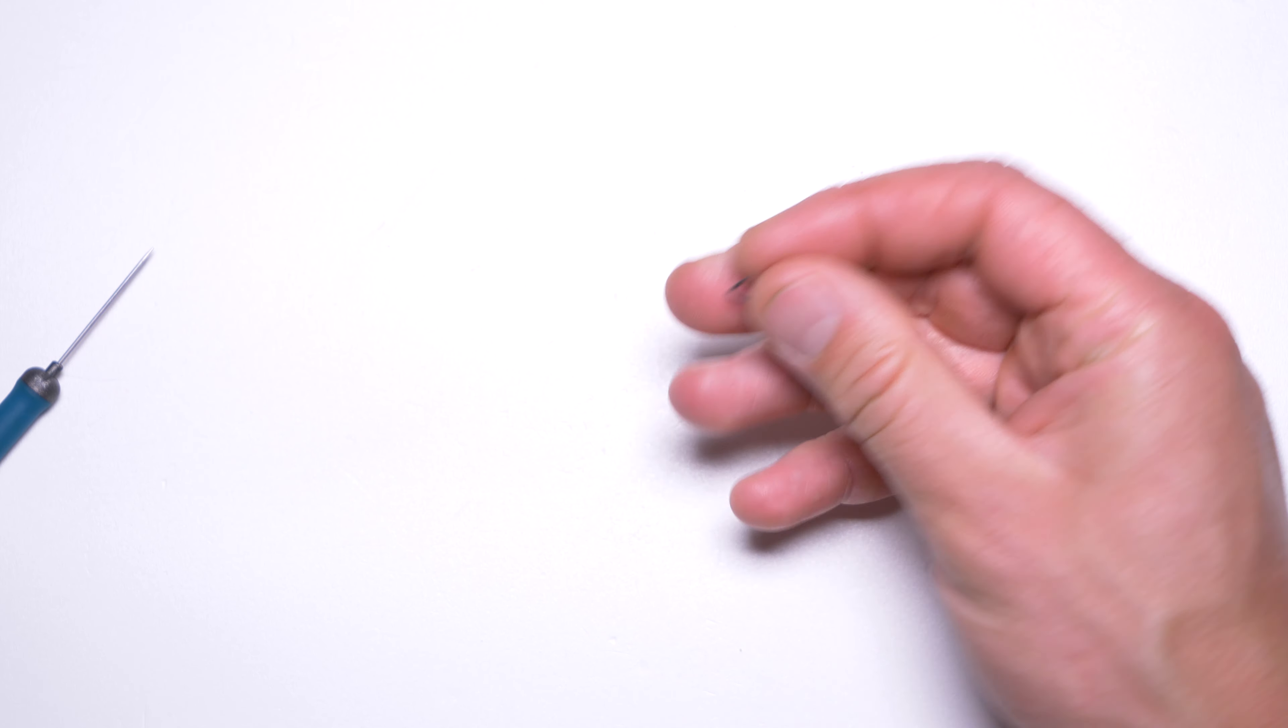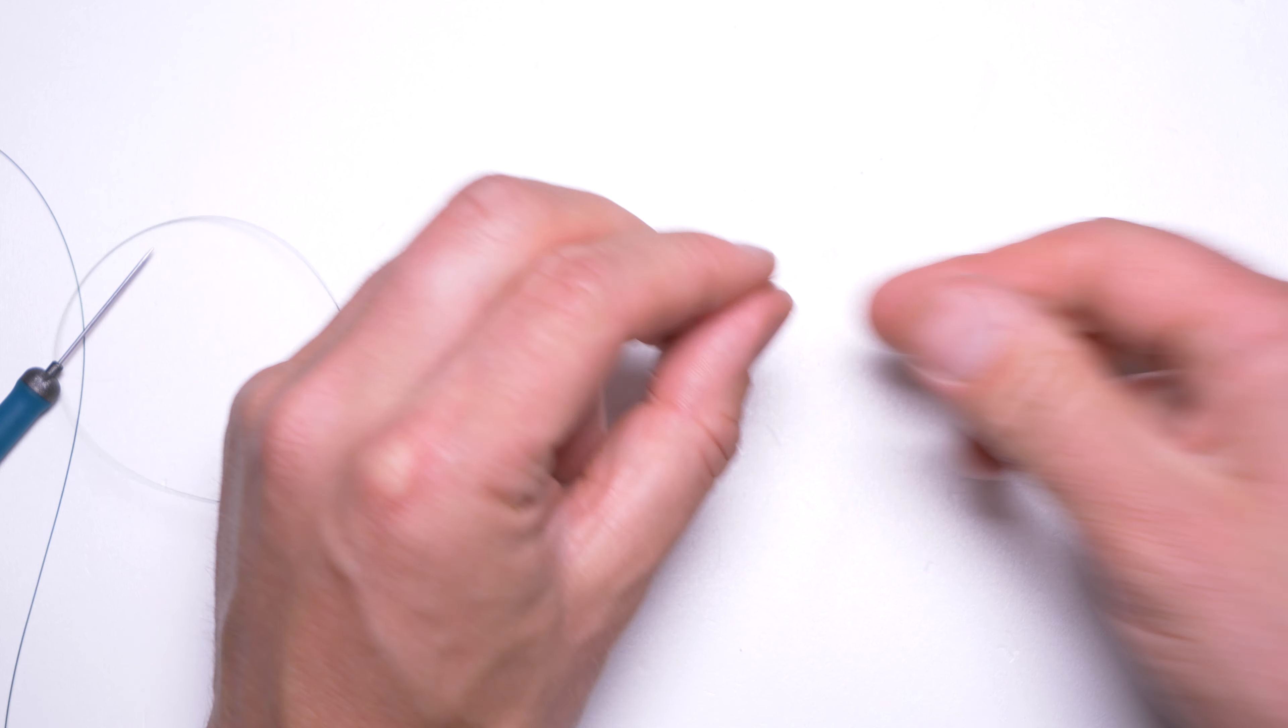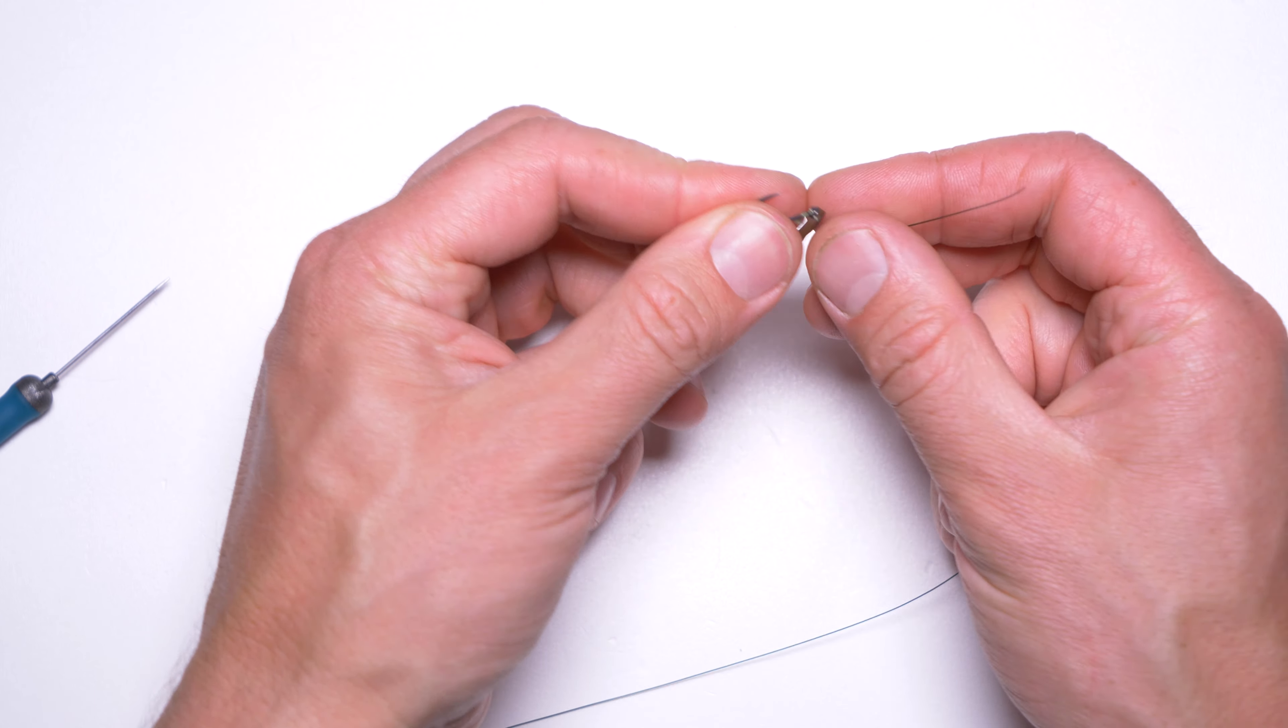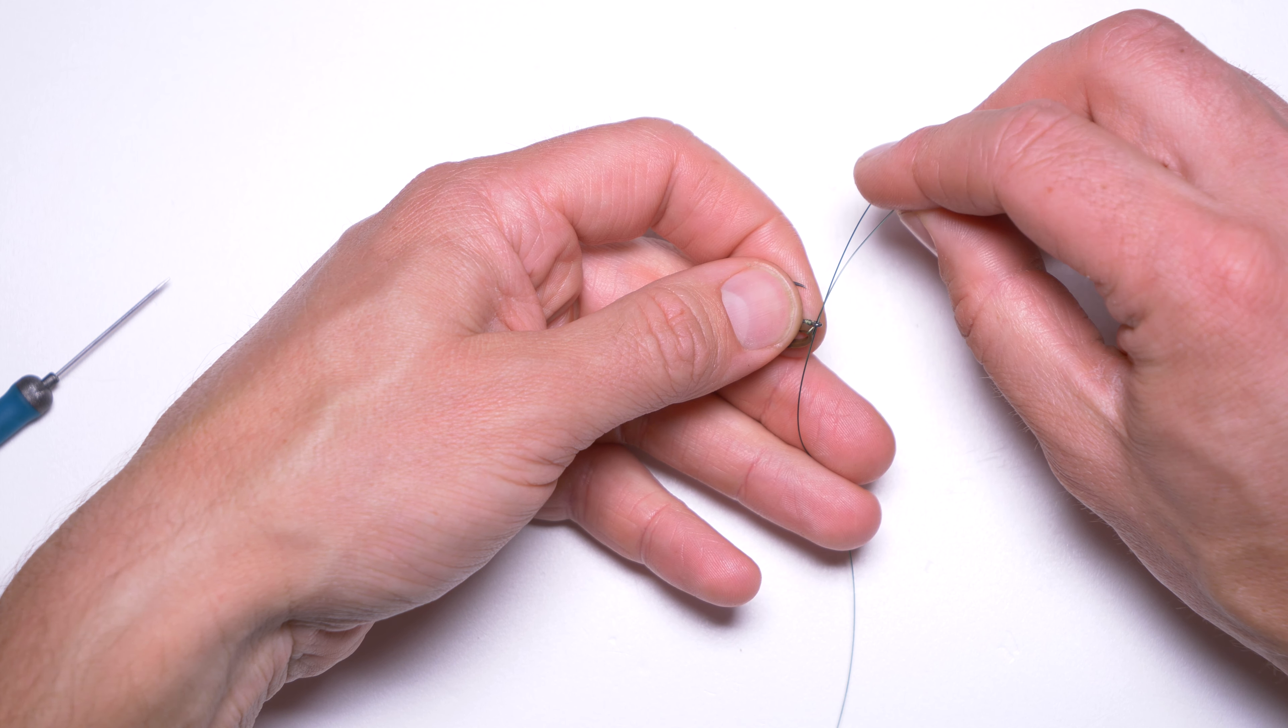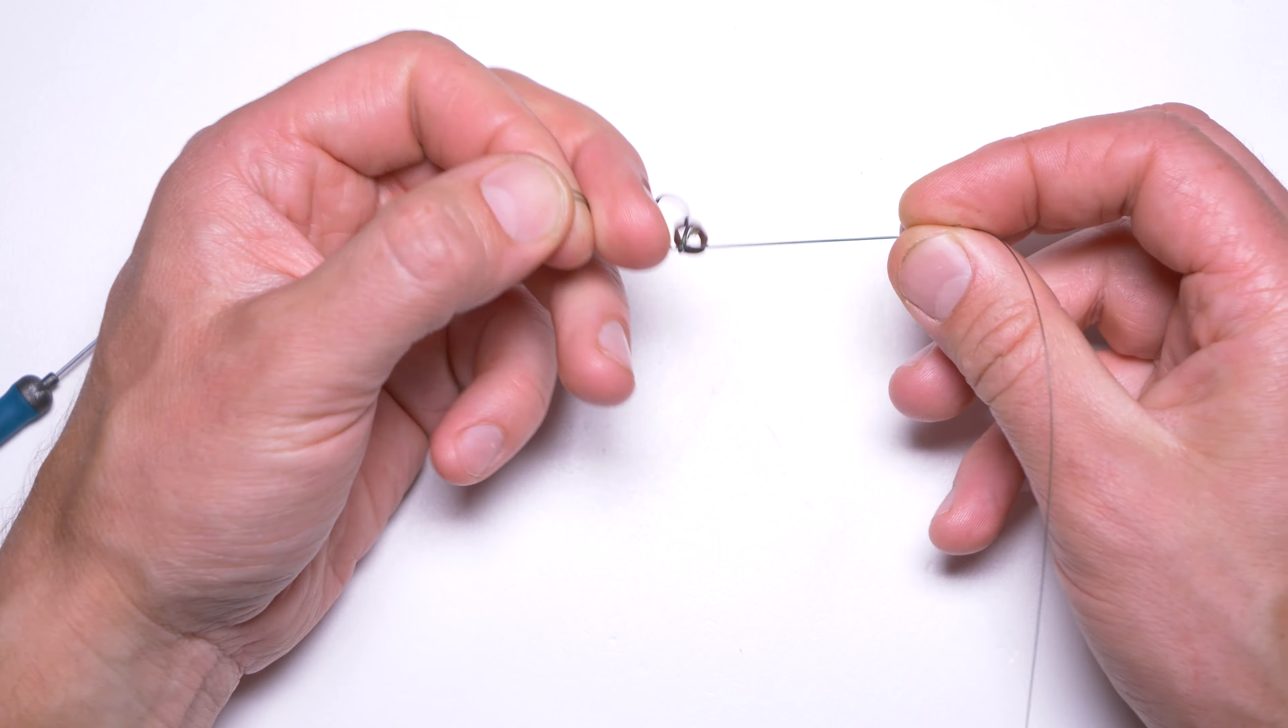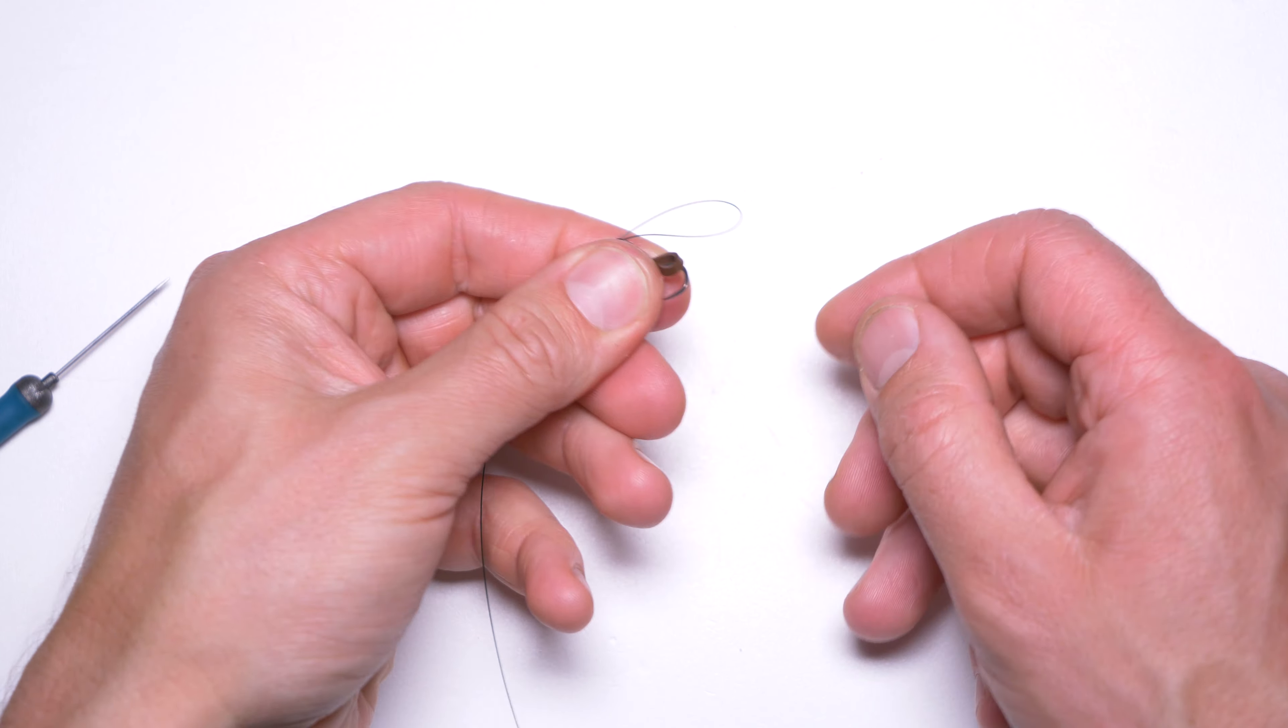If you want to attach this hook to your hook link—in this case I'm using black so you can see it better, but you'll use something clear and floating—you'll use your favorite knot to attach the hook to the hook link. For me it's a Palomar knot. Thread the hook onto double line and then make a simple surgeon's knot using that double line.